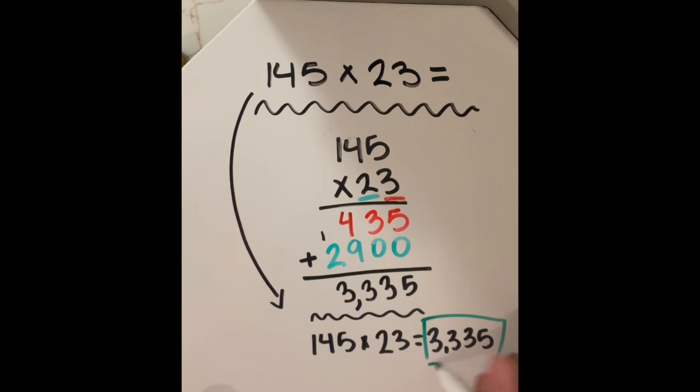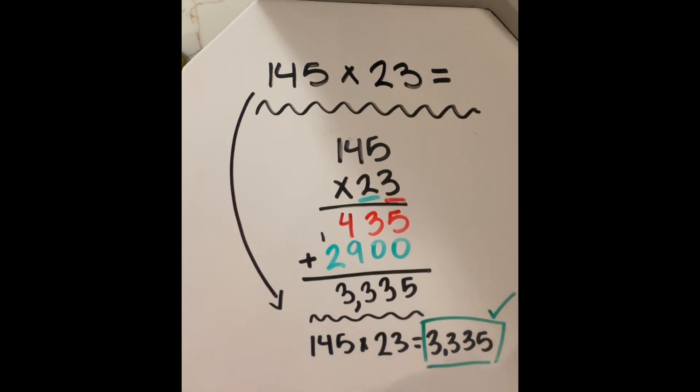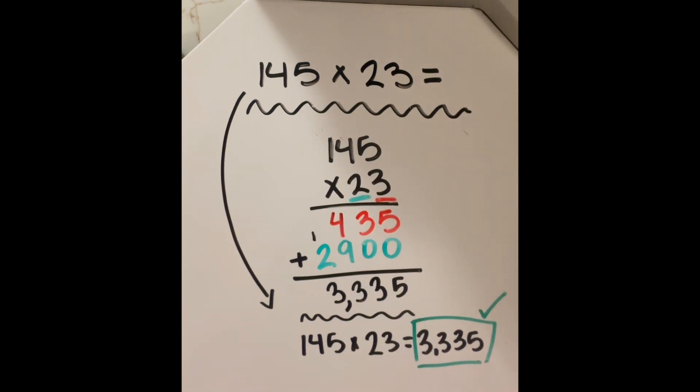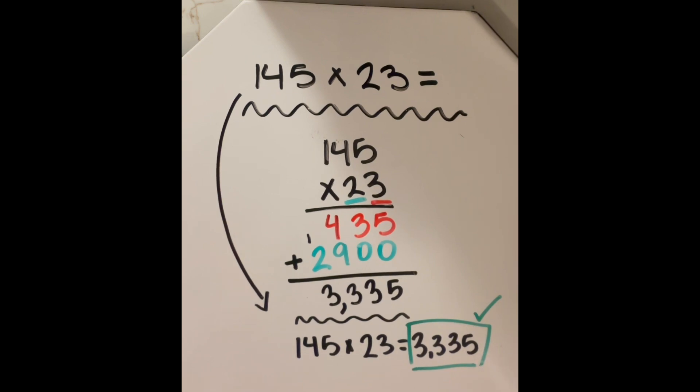And that is our final answer. So this is how we multiply a three digit number by a two digit number. I hope this video helps and I look forward to seeing you the next video. Thanks for watching. Bye.